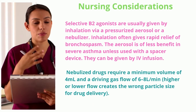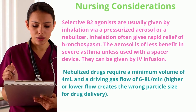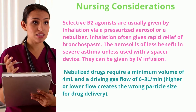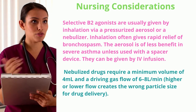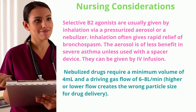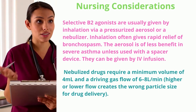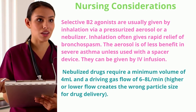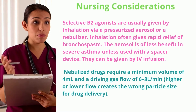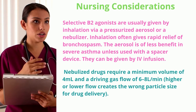Selective B2 agonists are usually given by inhalation via a pressurized aerosol or a nebulizer. Inhalation often gives rapid relief of bronchospasm. The aerosol is of less benefit in severe asthma unless used with a spacer device. They can also be given by IV infusion. Nebulized drugs require a minimum volume of 4 ml and a driving gas flow of 6 to 8 L/min.